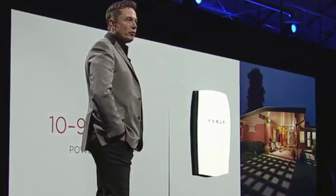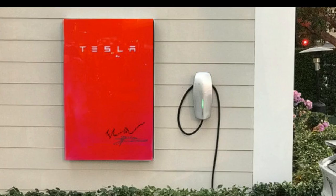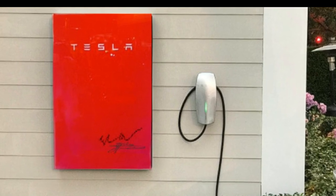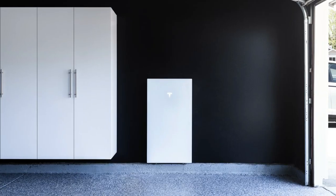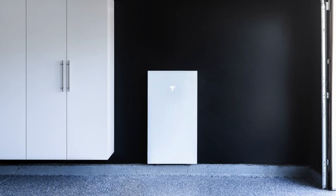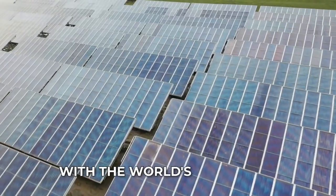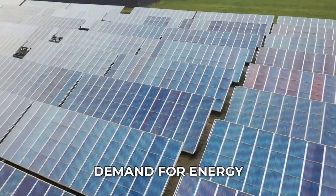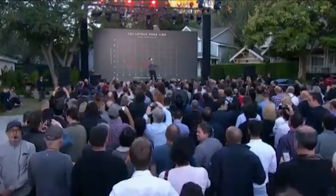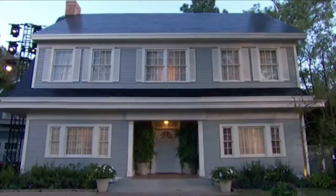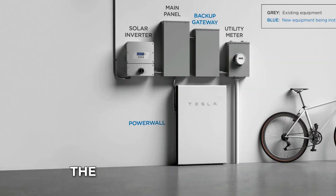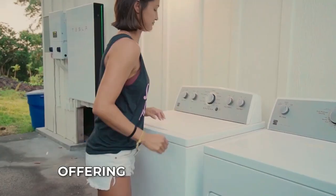10. Tesla Powerwall – Sustainable Energy Storage. Introduced in 2015, the Tesla Powerwall is an innovative energy storage solution designed for homes and businesses. This invention allows users to store excess energy generated by solar panels for later use, reducing reliance on traditional energy sources and promoting sustainability. The Powerwall exemplifies Musk's commitment to addressing energy challenges.